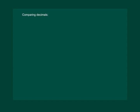Let us revise how to compare two decimals. Consider the numbers 22.1 and 18.9. We know that the number with the bigger whole number portion is bigger. Here 22 is bigger than 18, so 22.1 is greater than 18.9. The first rule is: the number with the bigger whole number portion is bigger.